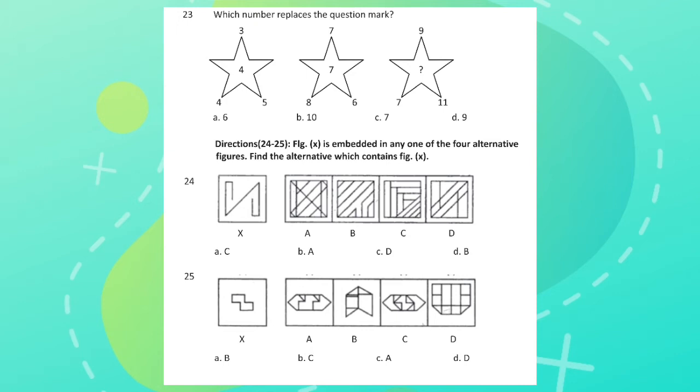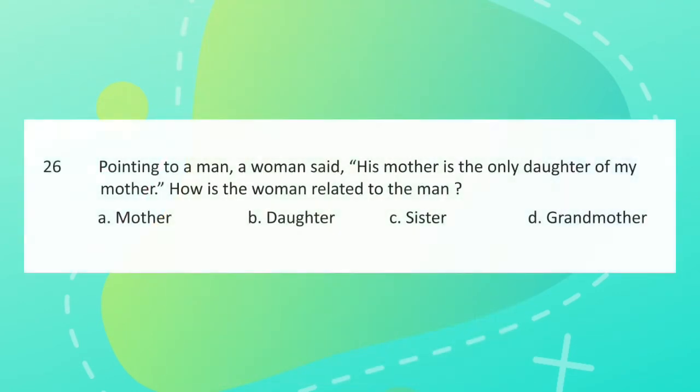Directions for question 24 and 25: Figure X is embedded in any one of the four alternative figures. Find the alternative which contains figure X. Question 26: Pointing to a man, a woman said his mother is the only daughter of my mother. How is the woman related to the man?